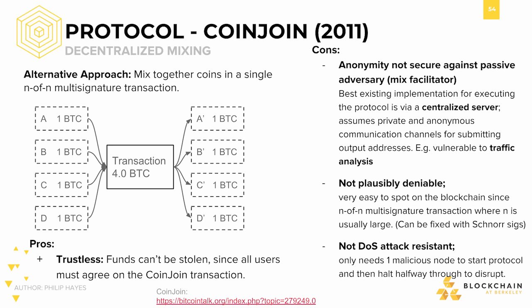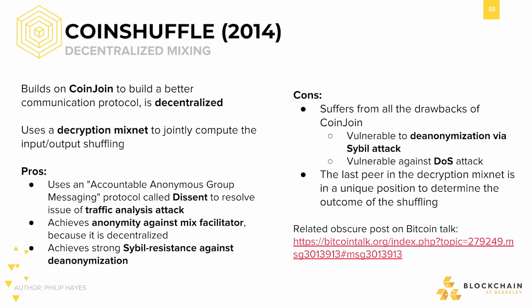Can we do better? Thankfully, the answer is yes. CoinShuffle is the sequel to CoinJoin, using a decryption MixNet to jointly compute the input-output shuffling, where MixNet is a routing protocol using cryptography to obfuscate the information trail. One of the benefits of this protocol is that it uses an accountable anonymous group messaging protocol.